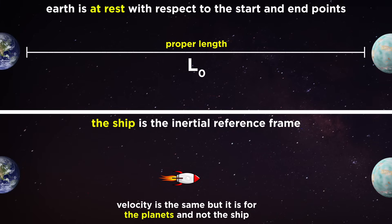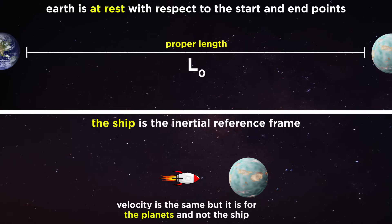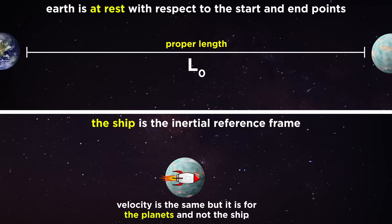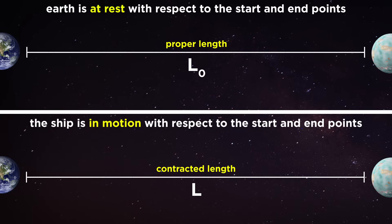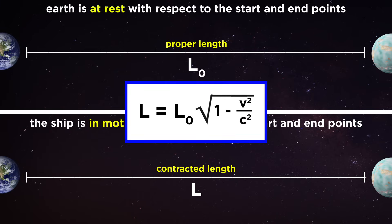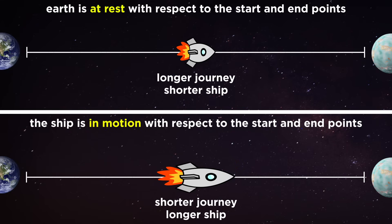But on the spaceship, the only thing that is the same is the relative velocity v — in this case representing the velocity of Earth and the destination as they move relative to the ship. Because this velocity must be the same, everything else must be different. Because of time dilation, the time interval will be different: delta-T-zero rather than delta-T, and we label the contracted length of the journey as L. The relationship between L-zero and L is given by an equation derived from the time dilation equation. Not only do the two observers arrive at different values for the length of the journey, they even arrive at different values for the length of the spaceship, as this dimension is parallel to the direction of travel. The earthbound observer would see the ship as being much shorter than the astronaut does.